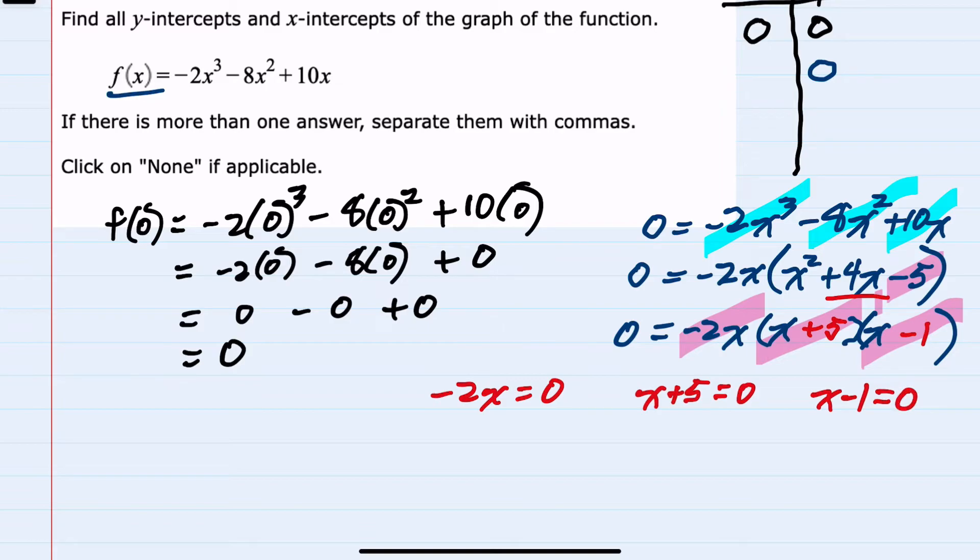So looking for x-intercepts here it looks like I'm going to have three. From the first part we can divide by negative 2 on both sides and have x equals zero. So our y value is zero, our x value is zero. That's the same (0, 0) that we found when we were looking for the y-intercept. It is also an x-intercept.